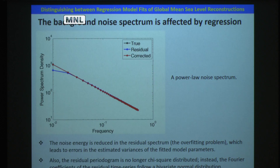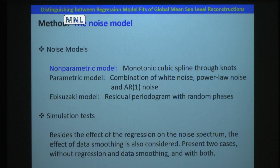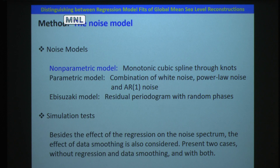Although this reduced energy seems small, it is in log space, so it is big enough to cause errors in regression model coefficient uncertainty. We also find that the residual periodogram is no longer chi-square distributed; instead, the Fourier coefficients of model residual time series follow a bivariate normal distribution. Based on the bivariate normal distribution, a maximum likelihood estimator is derived. Since we don't know the noise spectrum in most circumstances, we created a nonparametric model. For comparison, a parametric model and the traditional nonparametric Abusuzaki model are also included in the simulation test.